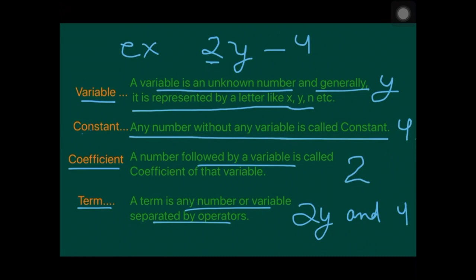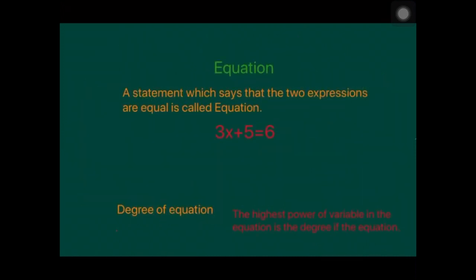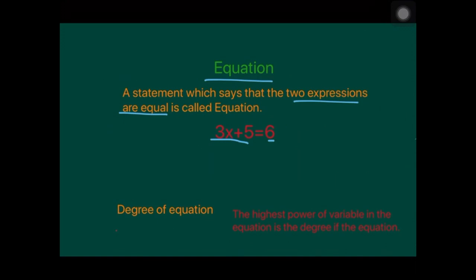The next thing is equation. An equation is a statement which says that two expressions are equal. For example, 3x plus 5 equals 6 — here 3x plus 5 is one expression and 6 is another. Both are equal. You can also say that expressions separated by an equal sign form an equation.